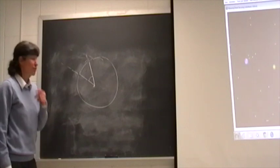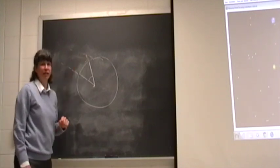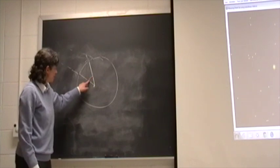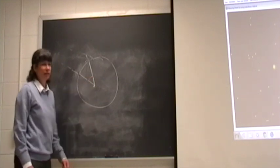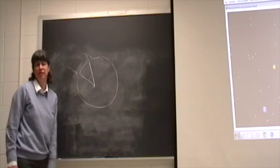What Aristosthenes realized is that the angle on this triangle exactly matches the angle, the angular distance between these two points on the Earth's surface.